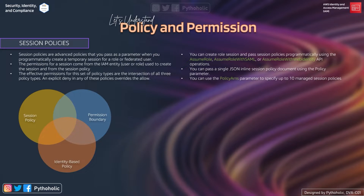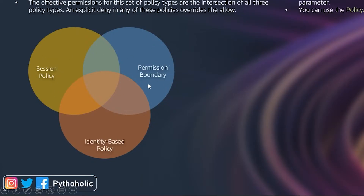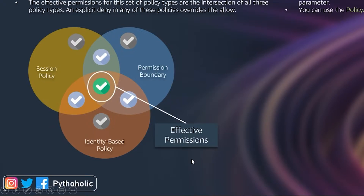If there is a session, there will be a session policy, and we need to pass session policies so that the principal can perform the operation. We can create role sessions and pass session policies programmatically using the AssumeRole, AssumeRoleWithSAML, or AssumeRoleWithWebIdentity API operations, and we can use policy ARNs to specify up to 10 managed session policies. The effective permissions are the intersection of the session policy, the permission boundary, and the identity-based policy.